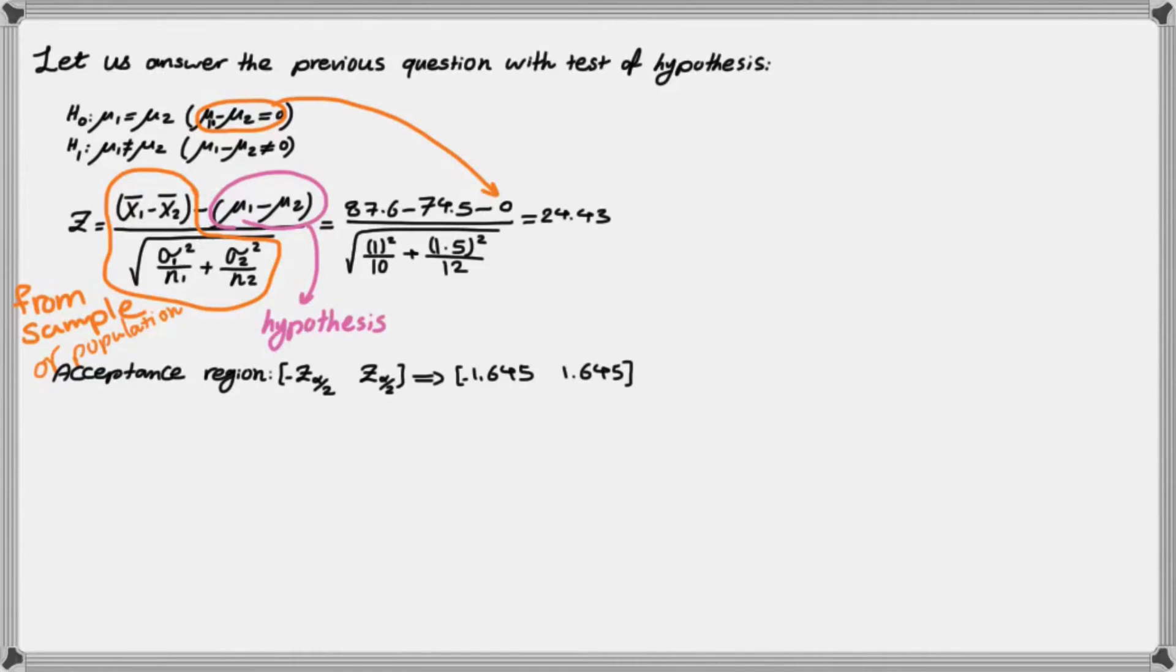Now I have to test whether this falls into my acceptance region, which is between negative 1.645 and positive 1.645. If you don't remember how to calculate z_{0.05}, please refer to the video related to how to calculate the critical z or z_{α}. There you can figure out how to calculate this number. Then you have to check whether this number, z, falls into this region or not, and it doesn't fall into this region. So you end up rejecting the null hypothesis.